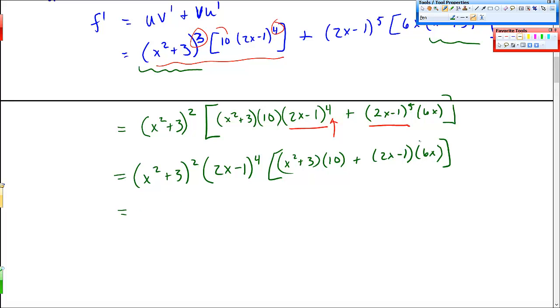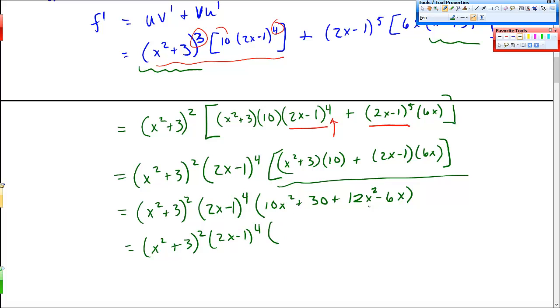And now this stuff that's inside kind of this bracket can be combined and simplified. You might factor out a 2 there. I'm not sure that makes your life simpler. But so inside here I get 10x squared plus 30 plus 12x squared, 2x times 6x minus 6x. And then I'll just combine my terms. And then this will be fully factored, I think. Let's see. 10x squared plus 12x squared is 22x squared minus 6x plus 30.